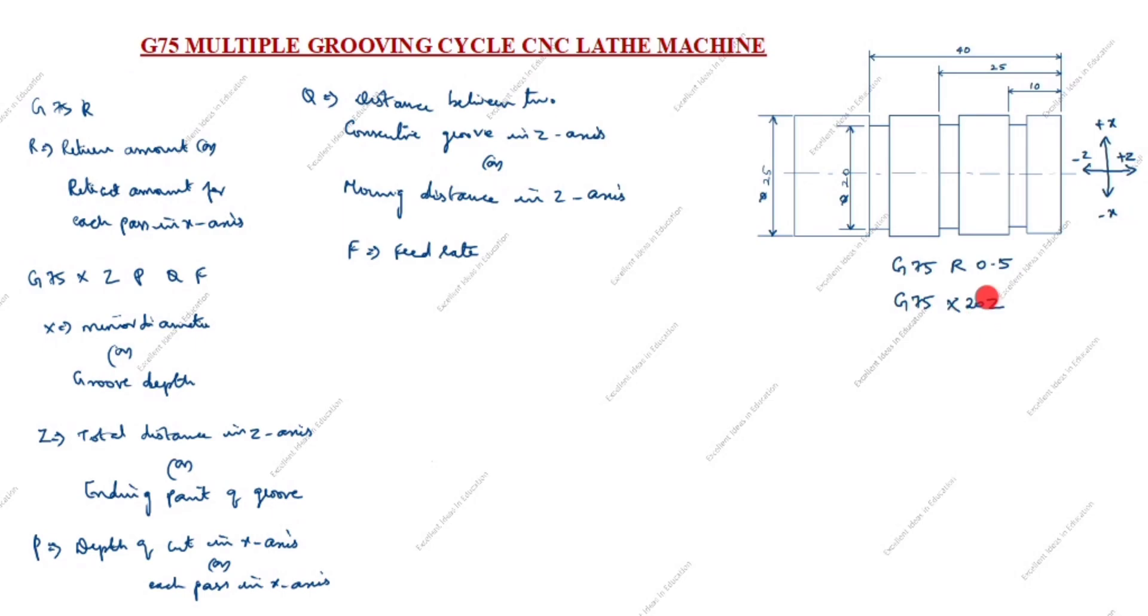Z, so how we will take Z value here you see. Total distance in Z axis. So groove distance only we will take, end point of groove. So end point of groove is here, starting point is here.